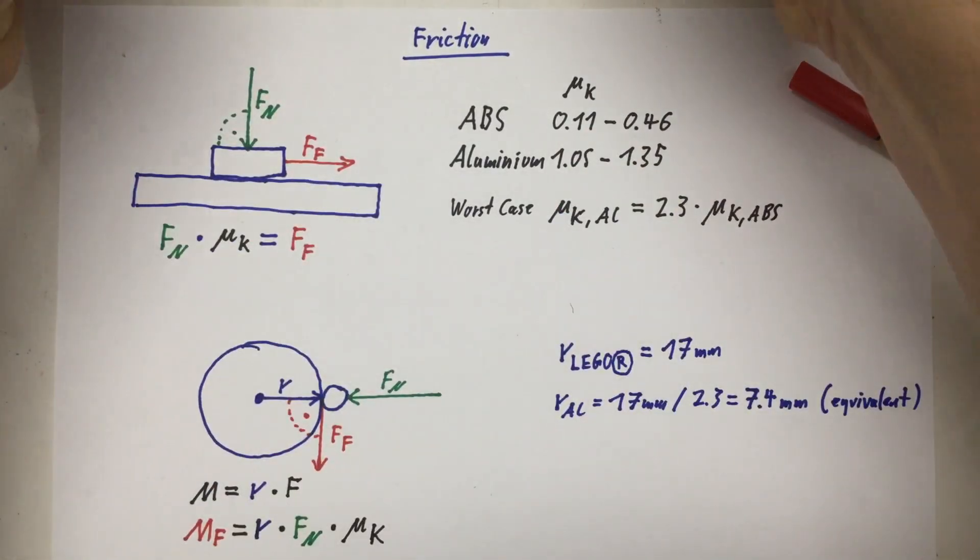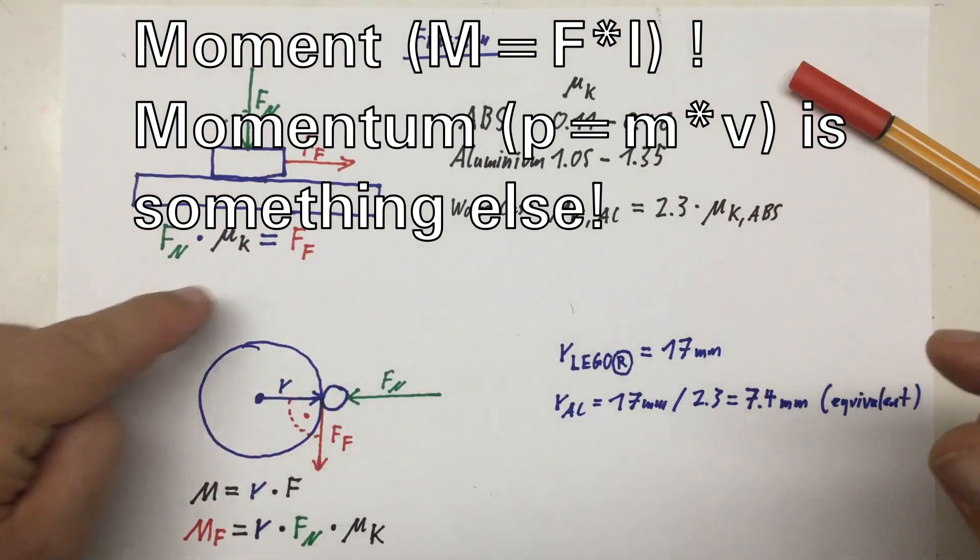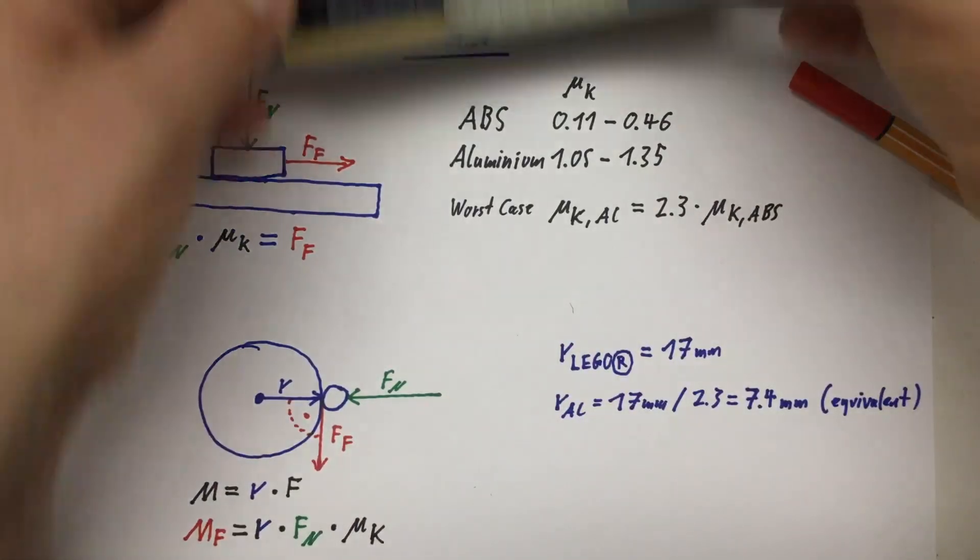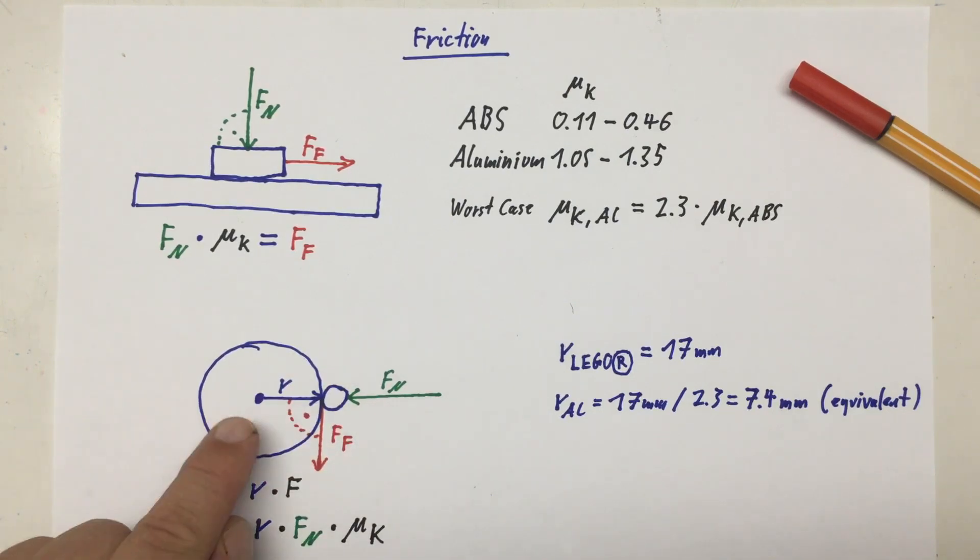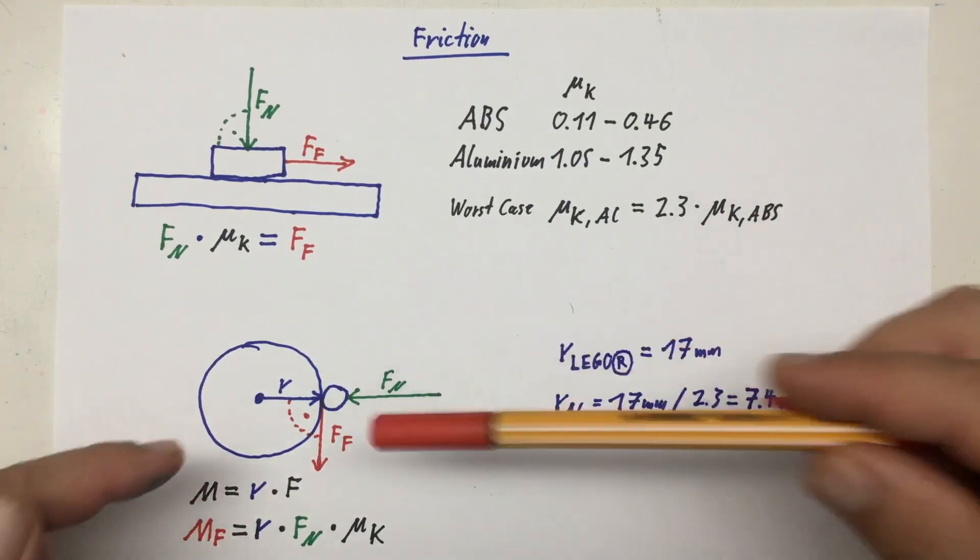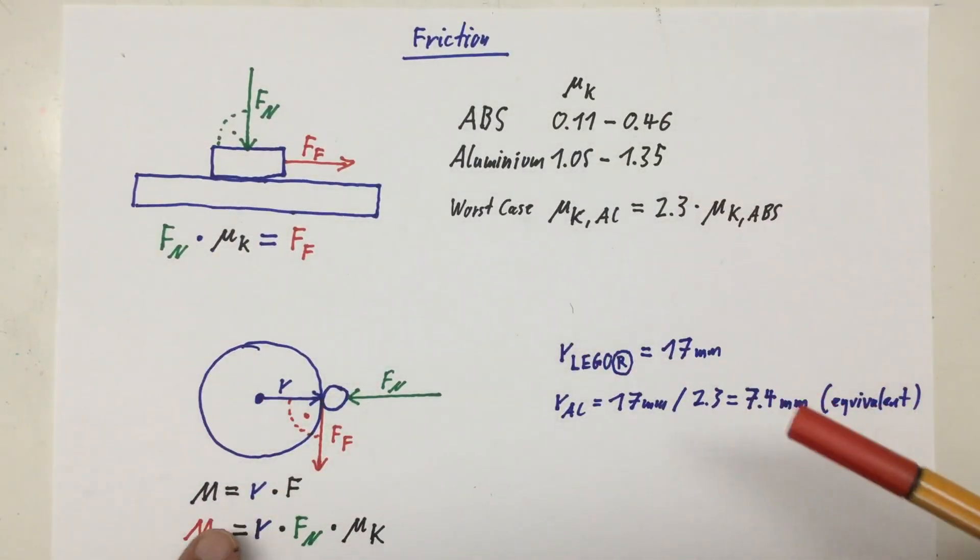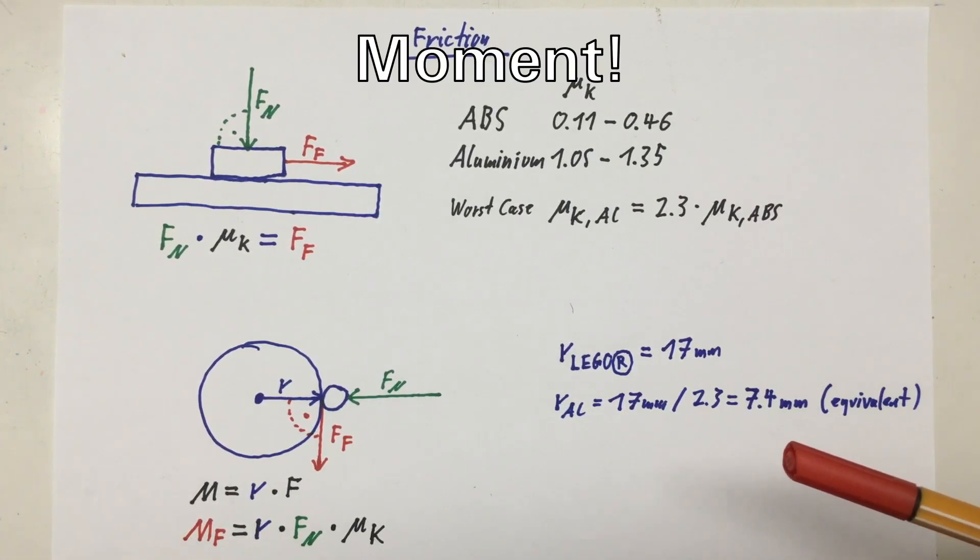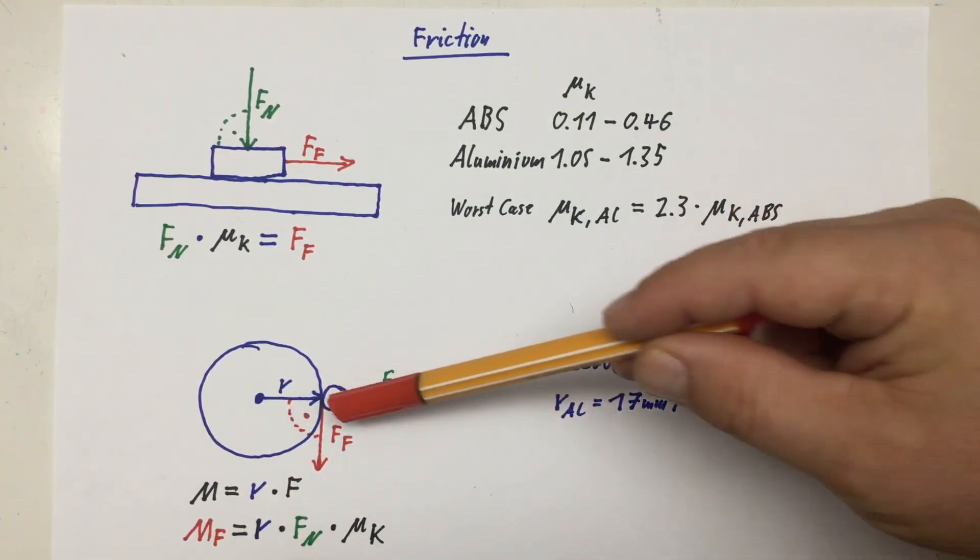But we are not talking here really about force but about momentum or torque. So we have here our little friction wheel, and there is something pressing, driven by a spring, onto it. That would be our normal force. And then we have our friction force, and our little wheel has a radius. So the momentum we have here, we need to turn our shaft, is the radius of our wheel times the force here. Or if we take that formula from up here, the friction momentum Mf is the radius of our friction wheel times the normal force exerted by the spring times our μk.